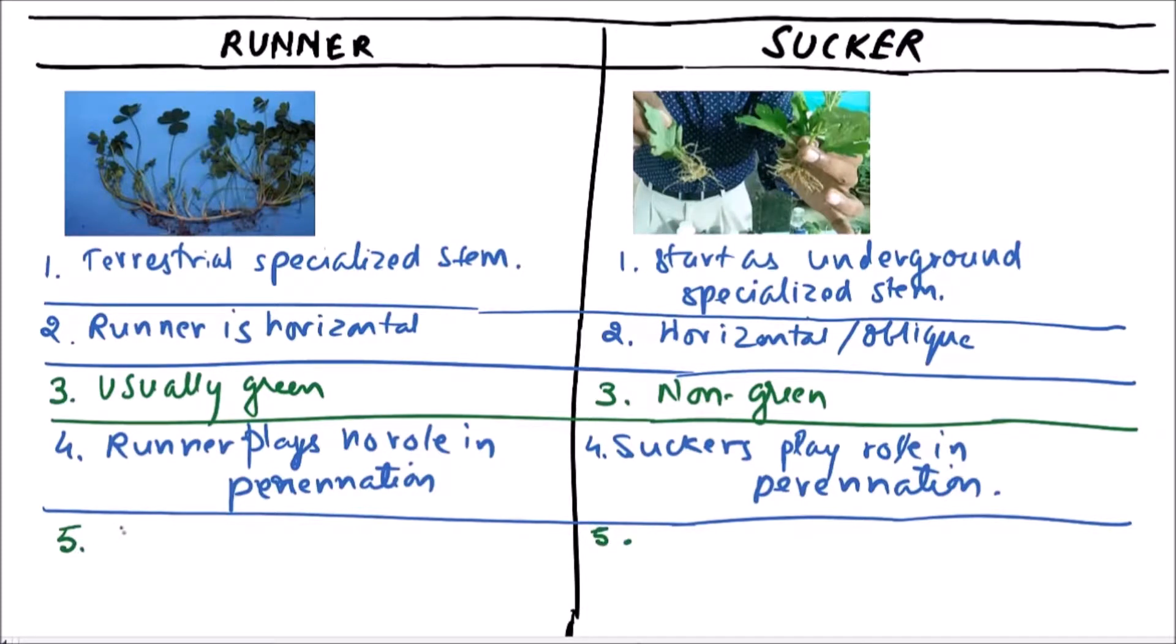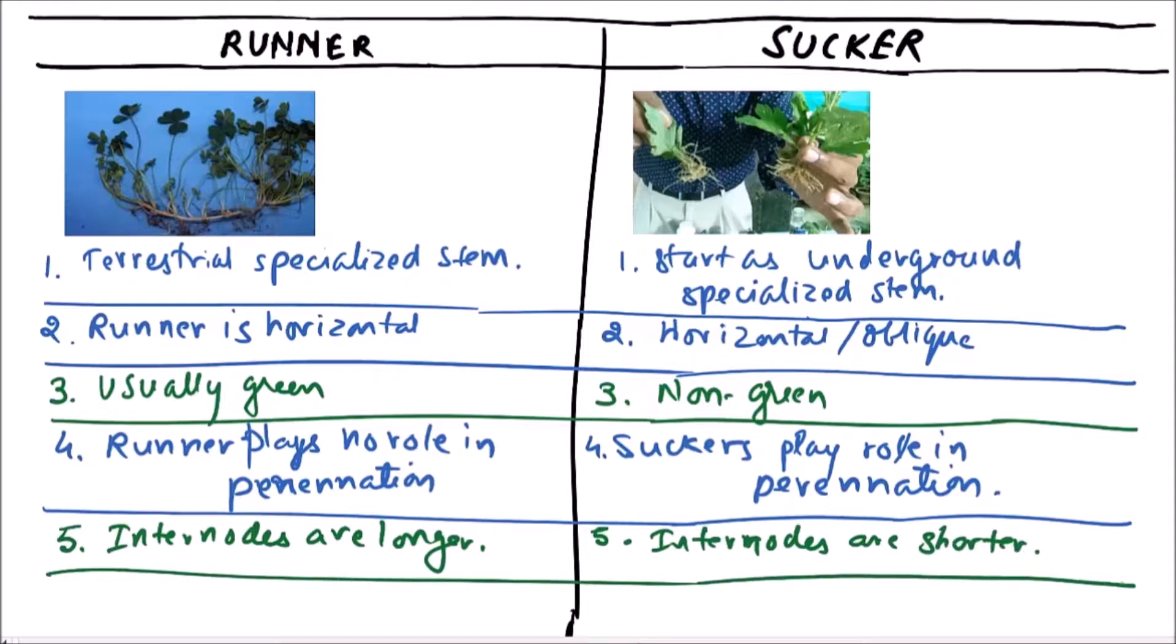In runners, internodes are longer, while here in suckers, internodes are shorter. Now we will discuss the examples.